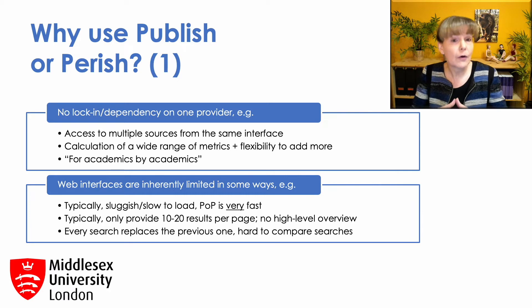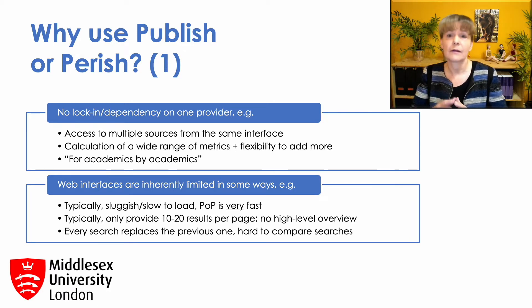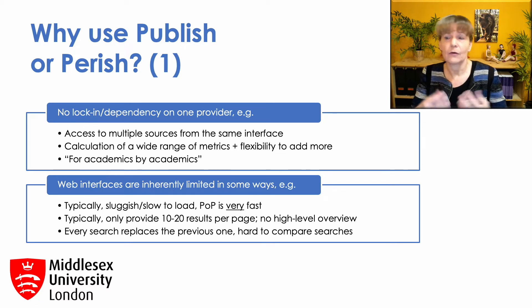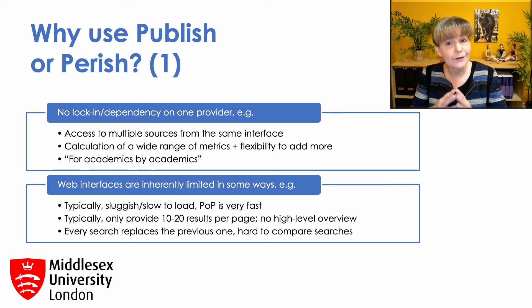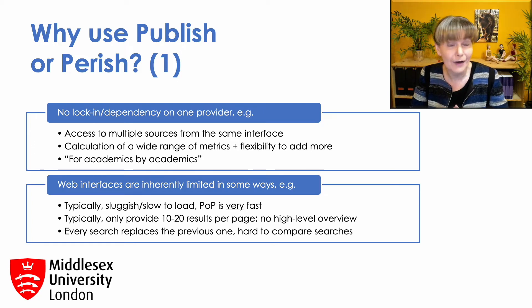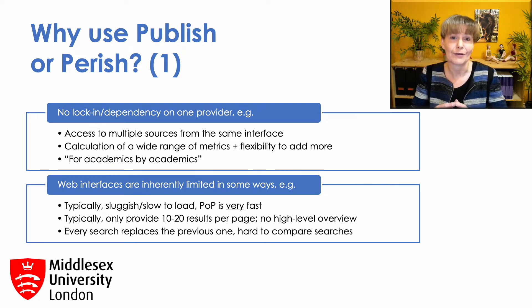Finally, in most of the web interfaces, each search replaces the previous search. Although in some of them you can keep a record of your searches, you cannot usually directly compare them, which is something you can do very, very easily in Publish or Perish.